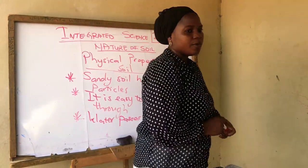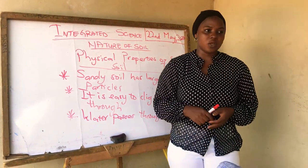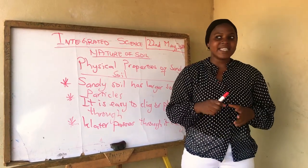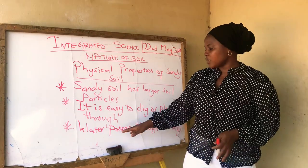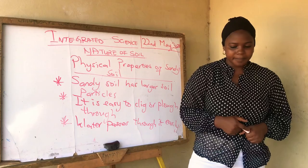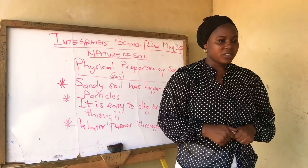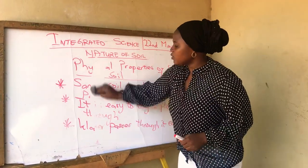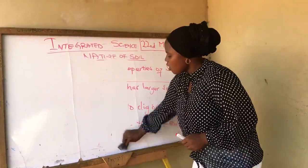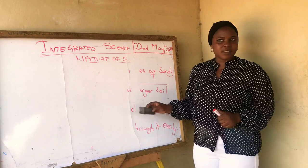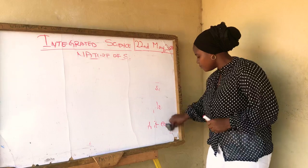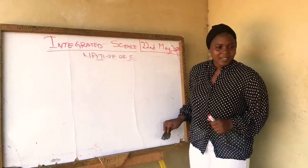So today we've talked about the physical properties of sandy soil. One: it has larger soil particles. Two: it is easy to dig or plow through. And three: water passes through sandy soil easily. Do you understand? Yes madam. Any questions? No madam. Okay, I'll be asking you questions. Alicia, give me one physical property of sandy soil. Water passes through sandy soil easily. Good. Clap for her.